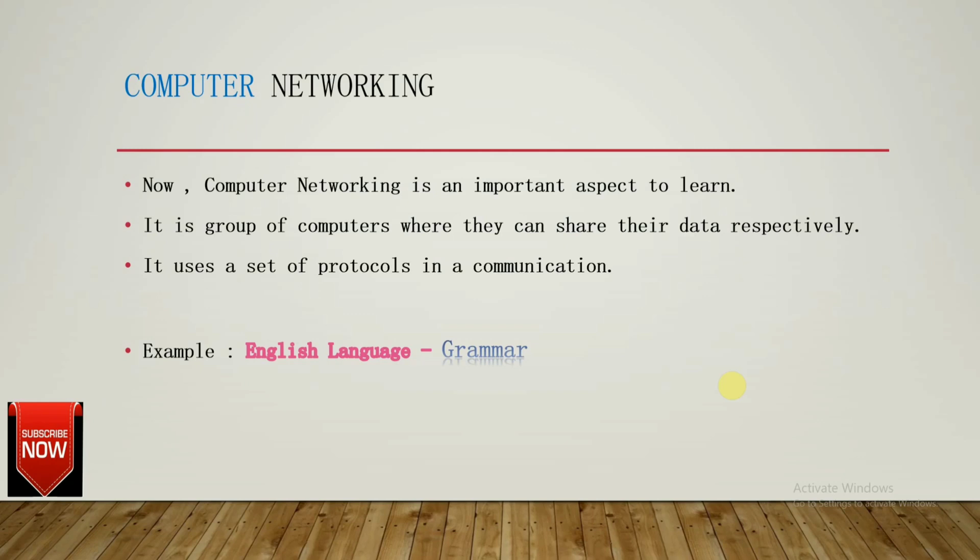So a computer network is a group of computers where they can share their data respectively. While sharing data, they use certain protocols in communication. For example, if we talk in English, we use certain grammar to describe actions.